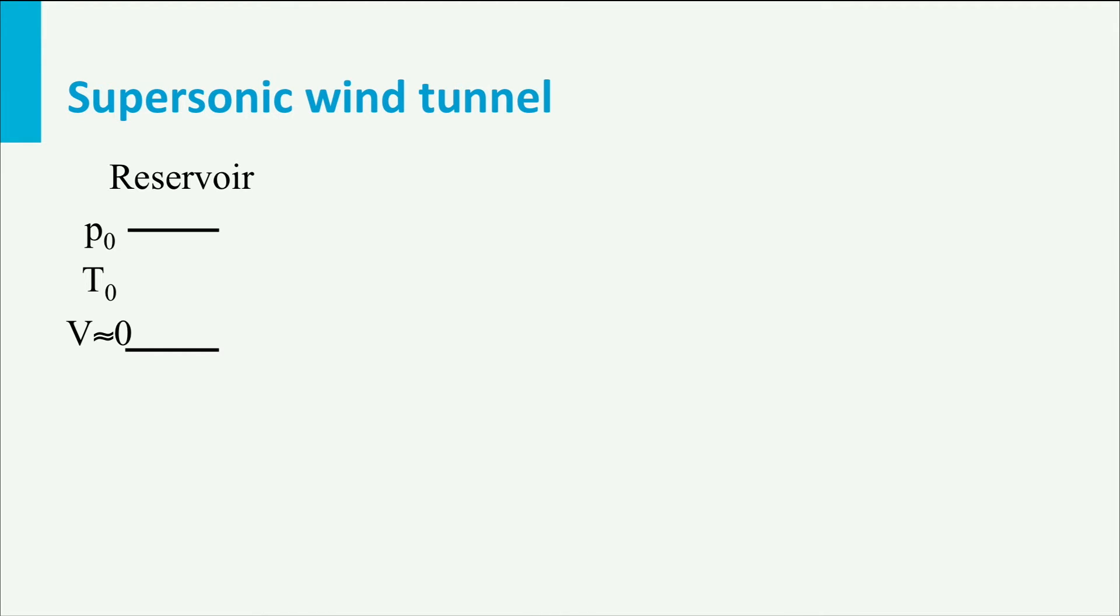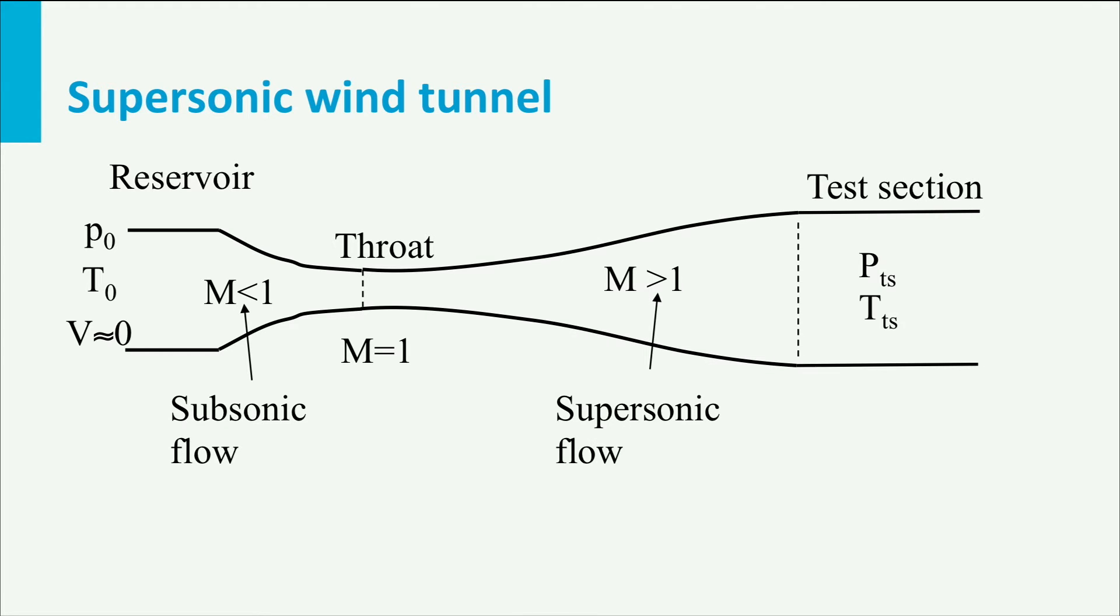Let's look at a schematic of a supersonic wind tunnel. We have a reservoir with air under high pressure and temperature. And when we open a valve the air will speed up and flow through a converging channel until it reaches the point with the smallest area, which we call the throat. In the throat the Mach number is 1. To get a supersonic situation in the test section we need a diverging channel after the throat.